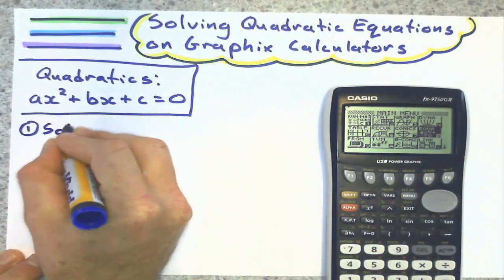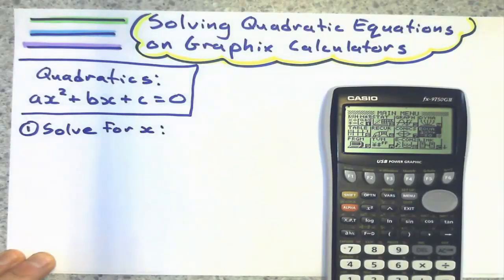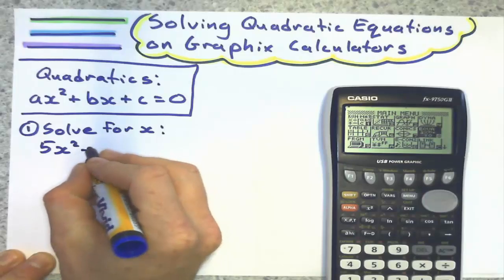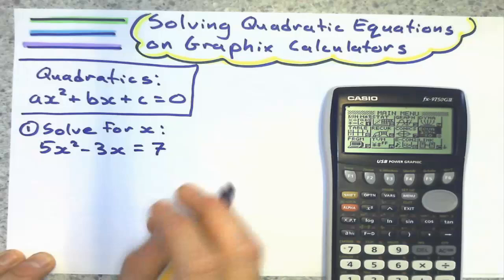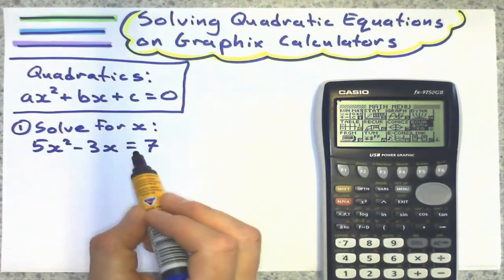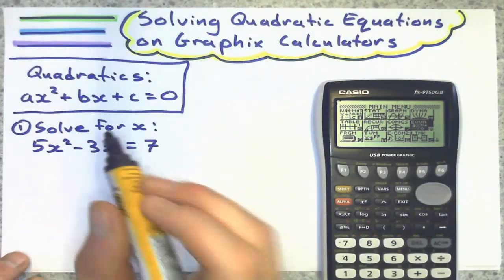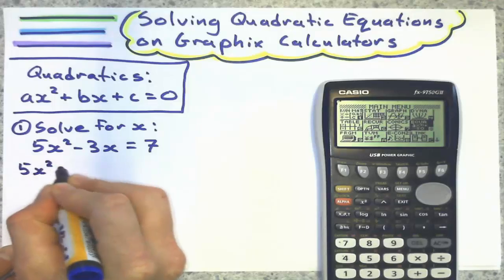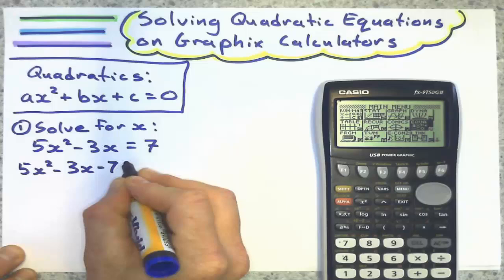So first example, I'll say solve for x, as it usually says, and I say I have 5x² minus 3x equals 7. And of course, we don't do anything with that yet, because it's not in the solving form, even if I wanted to use quadratic formula. I set it equal to zero by subtracting that 7 to the other side.